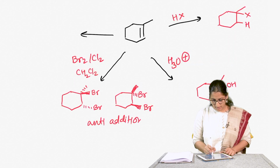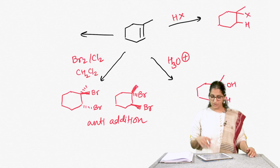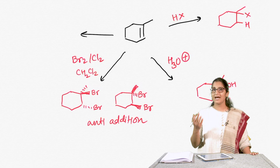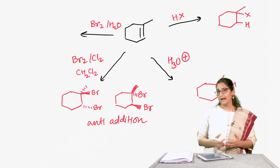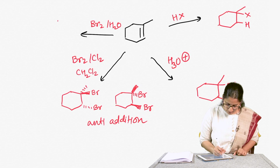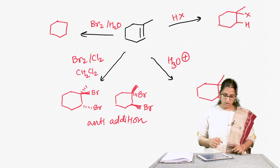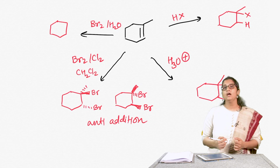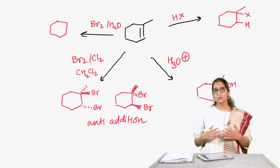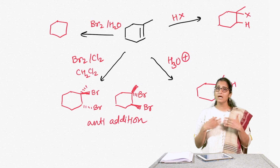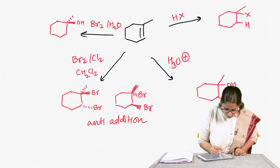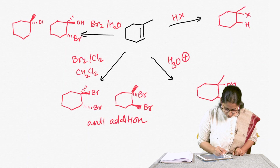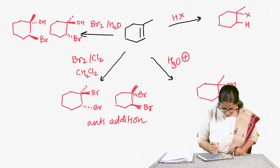This results in anti-addition. The next reaction was also a variation of bromination — halohydrin formation — where you add bromine in the presence of water. The OH always goes on the more substituted carbon and the bromine ends up on the less substituted carbon. Also, the bromine and the OH in the final product are anti to each other.